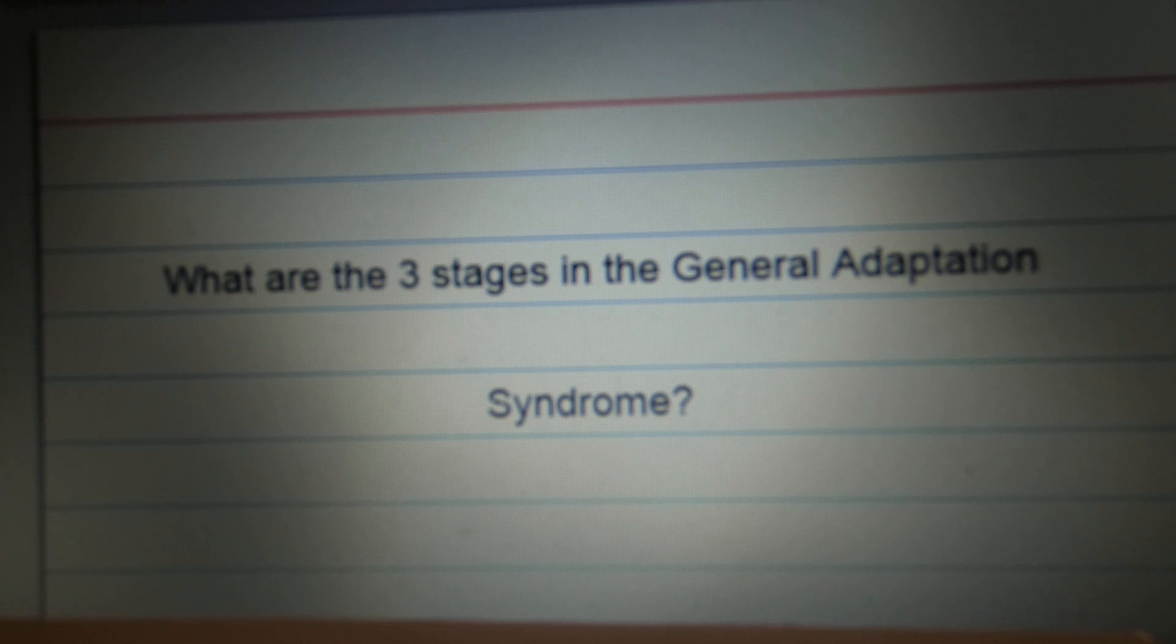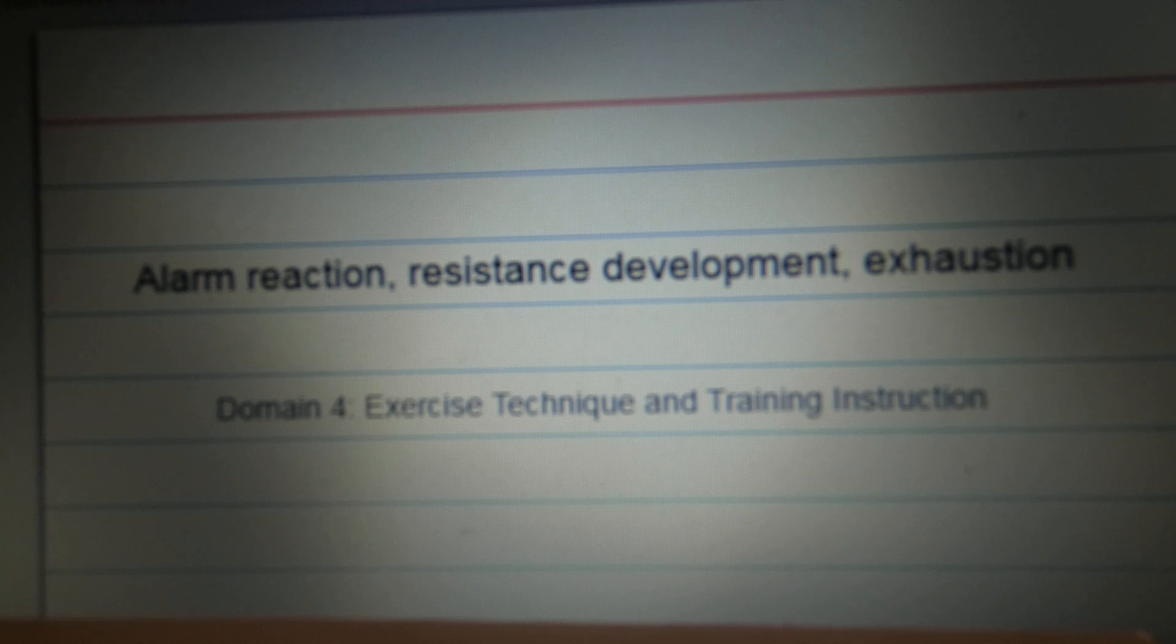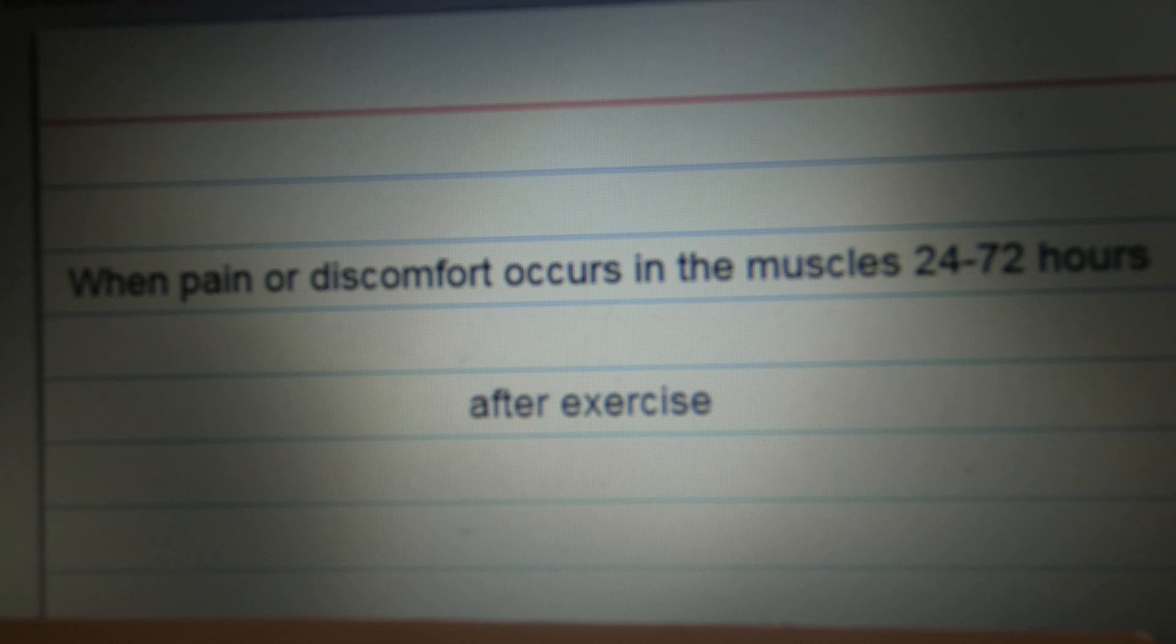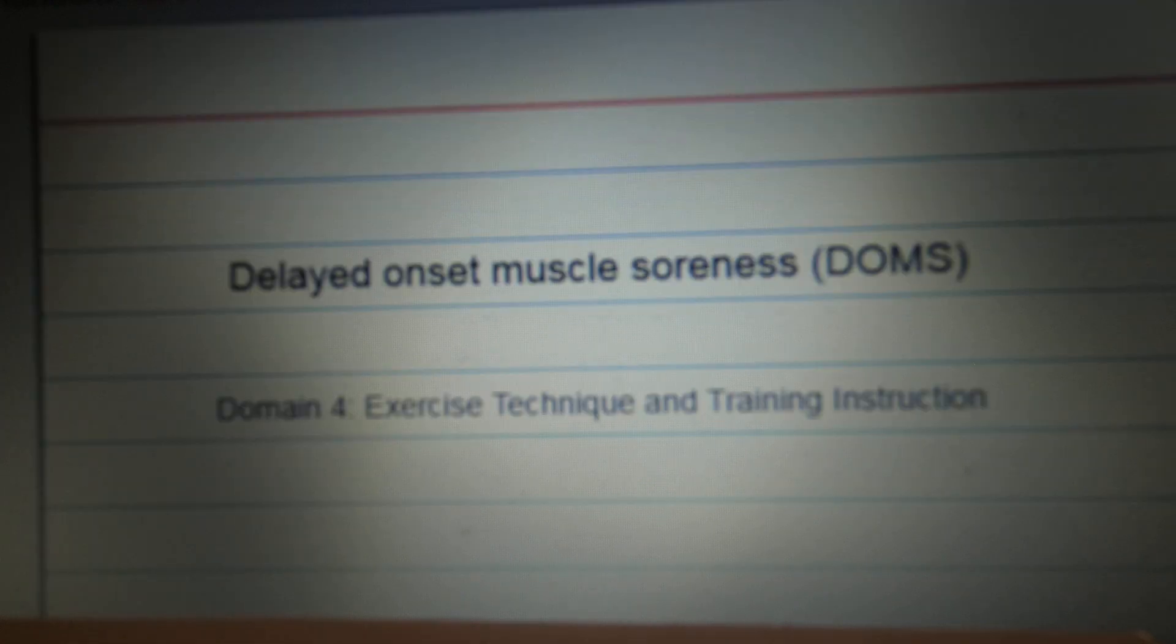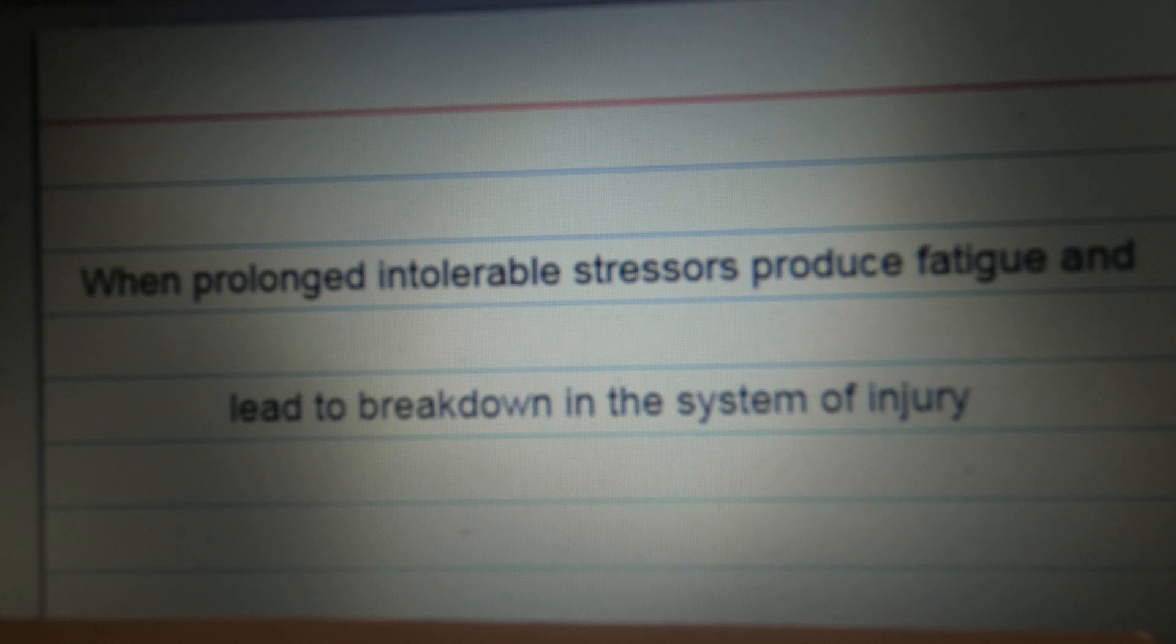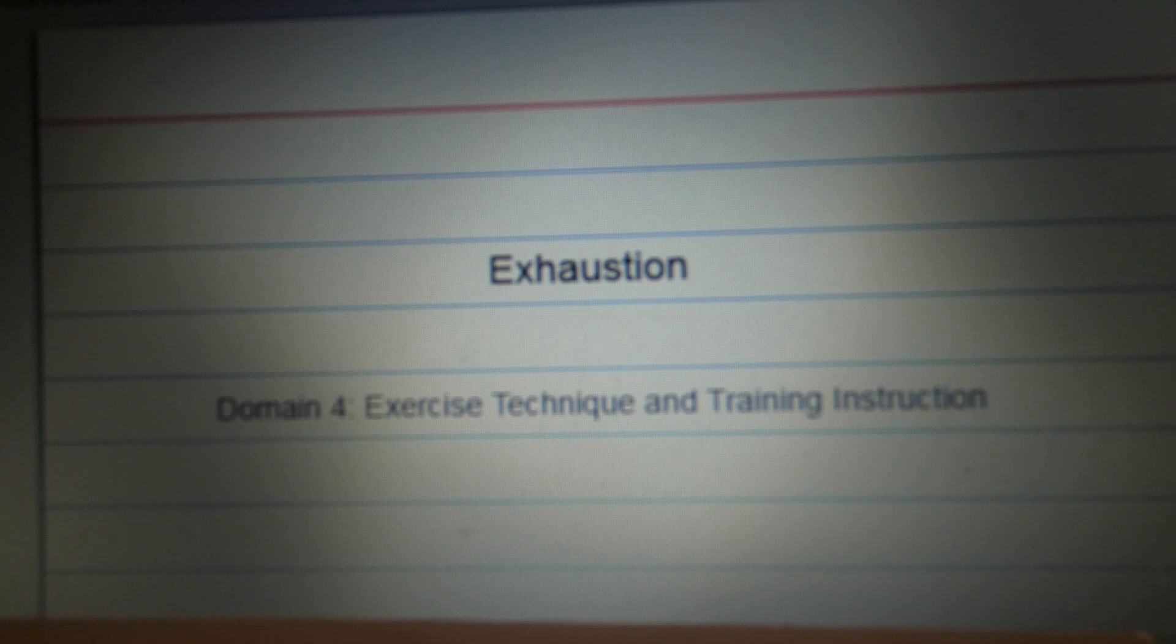What are the three stages in general adaptation syndrome? Alarm reaction, resistance development, exhaustion. When pain or discomfort occurs in muscles 24 to 72 hours after exercise. Delayed onset muscle soreness. DOMS. When prolonged, intolerable stressors produce fatigue and lead to breakdown in the system of injury. Exhaustion.